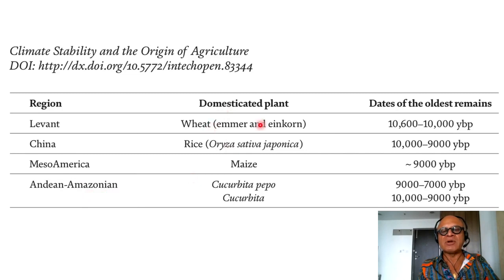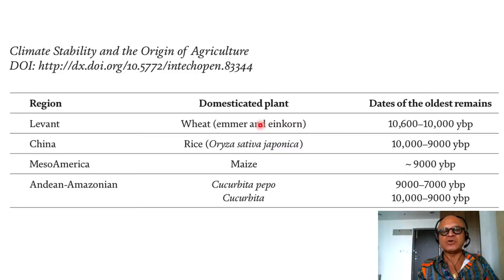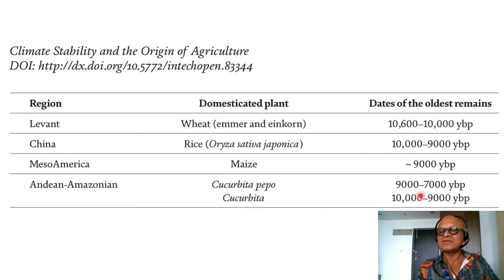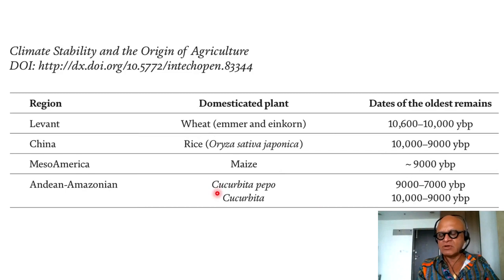We talked about emmer and einkorn before in terms of how their properties — in terms of holding on to the kernels — were changed over time. Those are the two that came out of the Levant. From China, Japonica came out, around 10,600 to 10,000 years before present. Rice: 10,000 to 9,000 years before present. Mesoamerica is of course the maize center, at 9,000 years. Cucurbita pepo at 9,000 to 7,000 years before present. This adds more detail in terms of specific timings of certain crops, beyond the big table with various timelines of pre-domestication, domestication, and so on.